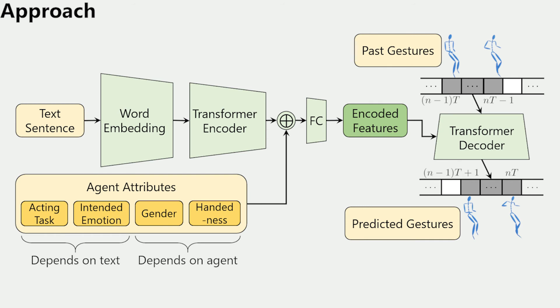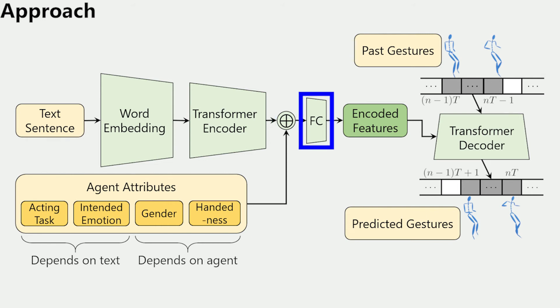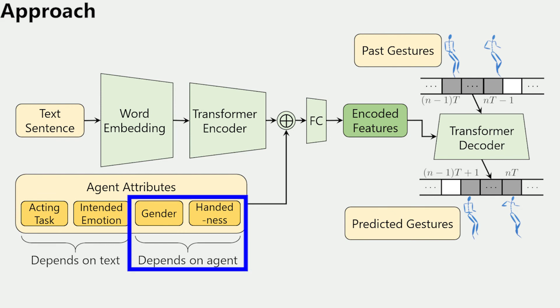We now present an overview of our text-to-gestures network. We first transform the words in the input text sentence to embeddings using the pre-trained GloVe model. We use our transformer encoder to transform these embeddings into latent feature representations, taking into account the sequence and the semantics of the words. We then append our agent attributes to these latent representations and transform them via a set of fully connected layers to our final encoded features. Our agent attributes consist of the acting task as one of narration or conversation, the intended emotion as a point in the VAD space of emotions, and the gender and handedness of the target virtual agent.